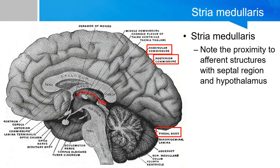Another way to understand what the stria medullaris brings to the habenulum is by looking at the anatomical proximity of these structures. The stria medullaris is highlighted in red. We also see the habenular commissure, the posterior commissure, and the pineal gland. The beginning of the stria medullaris is anatomically close to the septal area (containing the septal nuclei), the hypothalamus, and the anterior thalamus — all of which contribute input via the stria medullaris into the habenulum.